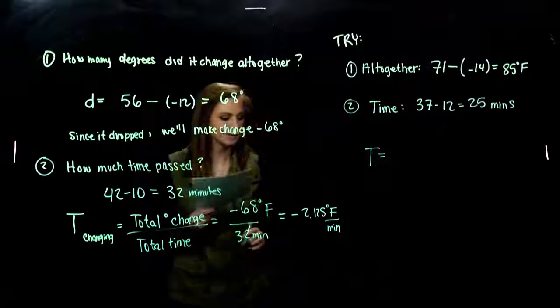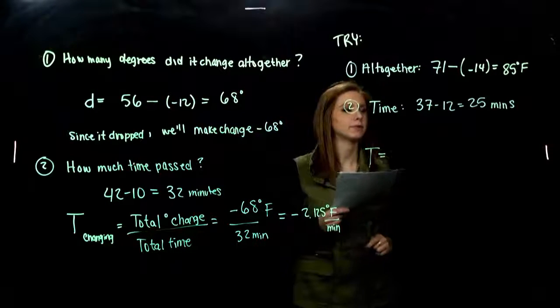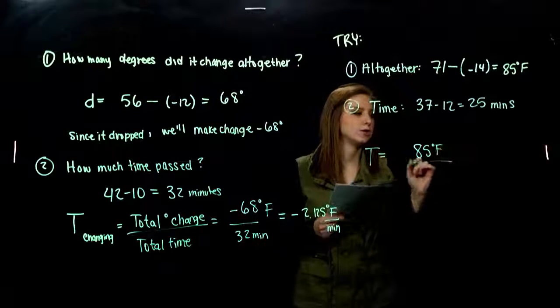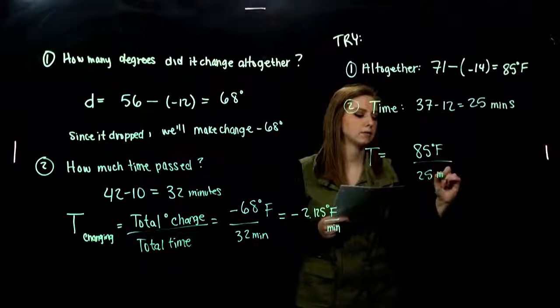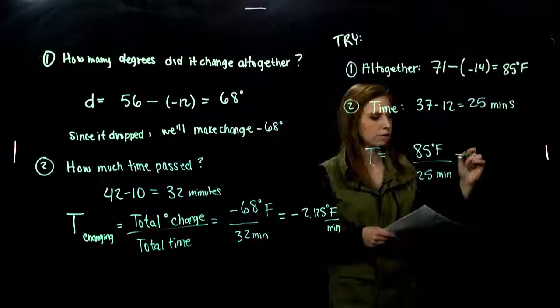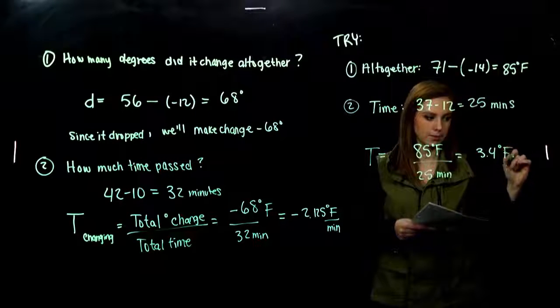So per minute, the rate of change for the temperature was what? Total degree change over the number of minutes. If you actually did the longhand division, what did you come up with? 3.4 degrees Fahrenheit per minute.